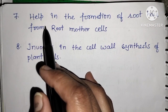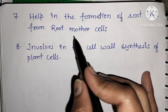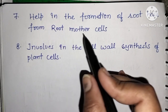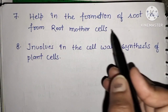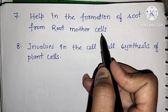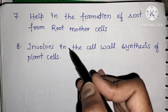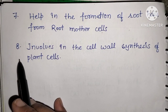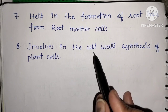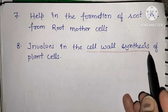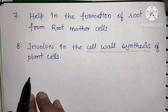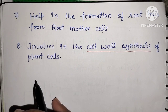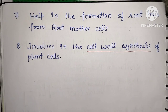The Golgi apparatus also helps in root hair formation in plant cells, assisting the root mother cells. Additionally, the Golgi apparatus is involved in cell wall synthesis in plant cells, making it very important in plant biology. These are the main functions that the Golgi apparatus performs.